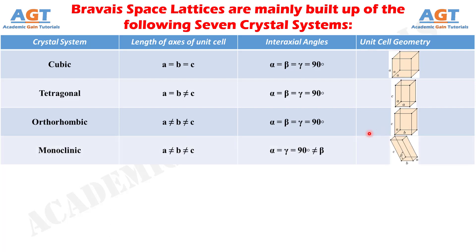The fourth crystal system is the monoclinic system. In Bravais lattices with monoclinic systems, the lengths of axes A, B, and C of the unit cell are not equal to one another. Their corresponding angles alpha and gamma are both equal and they are 90-degree angles, but the interaxial corresponding angle beta is not equal to 90 degrees, as we can see in an example of monoclinic system in this figure.